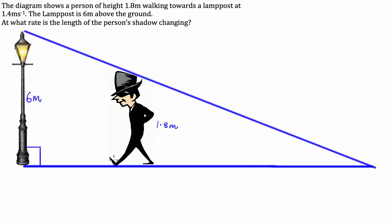G'day guys, we've got an applications of calculus question here today. We've got a diagram that I've just drawn which shows a person of height 1.8 meters walking towards a lamppost at 1.4 meters per second.